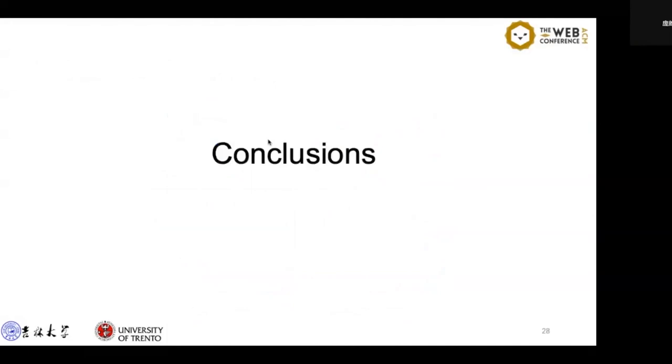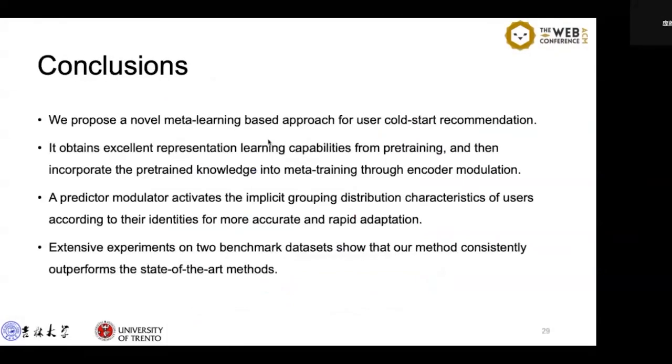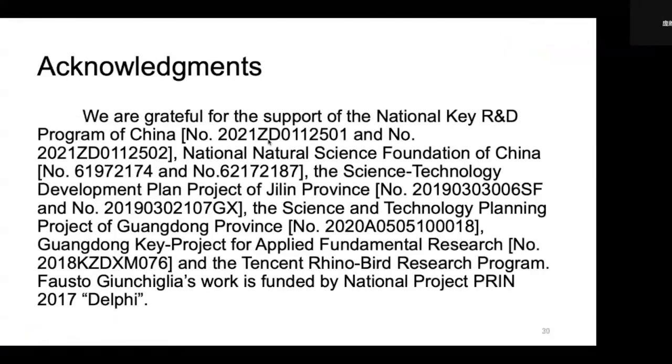Finally is the conclusion. We propose a novel meta-learning-based approach for user cold-start recommendation. It obtains better representation learning from pre-training, then incorporates the trained knowledge into meta-training through encoder modulation. A predictor modulator captures the implicit group distribution characteristics for users according to their identities for more accurate and rapid adaptation. Extensive experiments on two benchmark datasets show that our method consistently outperforms state-of-the-art methods. We are grateful for the support of the following funders. Thank you.